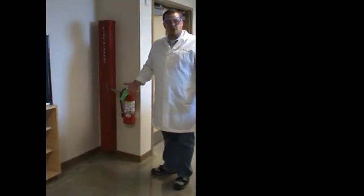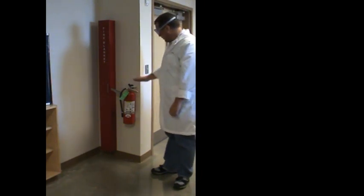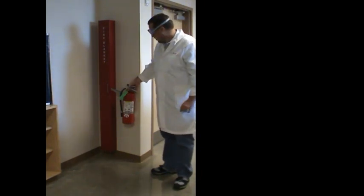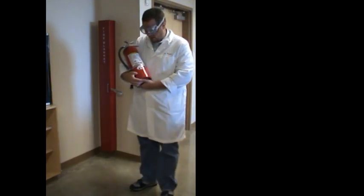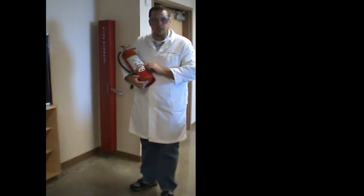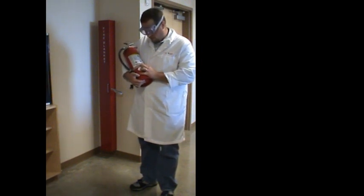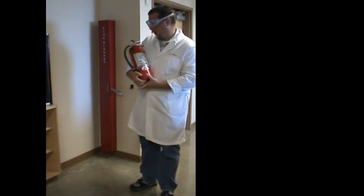Also located in the front of the room are some other fire extinguishing devices. First of all is a fire extinguisher. In our labs, we have fire extinguishers that are type ABC, suitable for paper and woods, liquid fires, and electrical fires.